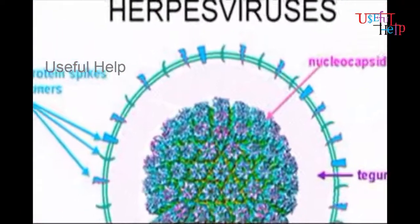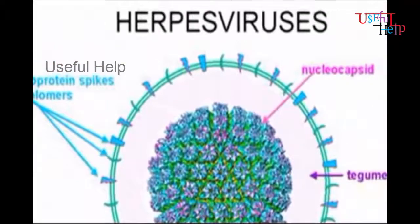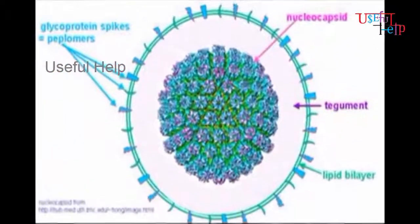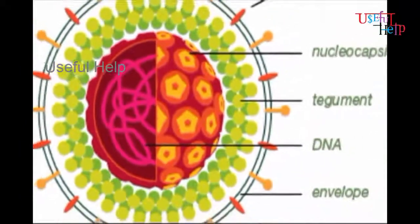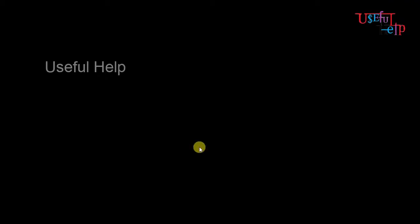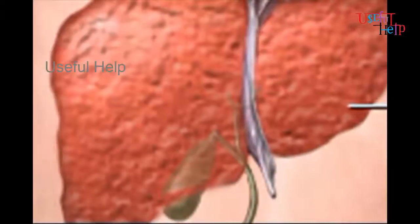Genital herpes is a sexually transmitted disease caused by the herpes simplex virus type 1 and type 2. The infection signs include the appearance of one or more blisters on or around the genitals or rectum.